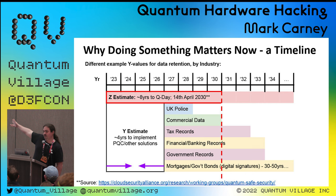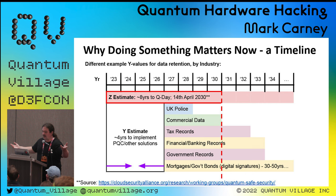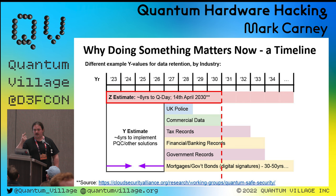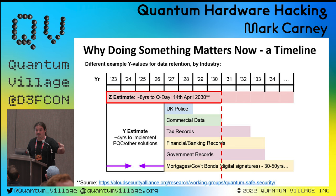With 2030 as the given date, here are some Y estimates. Four years to implement a PQC solution — who thinks that can be done in all enterprises? UK police data must be kept for two years, commercial data for about four years, tax records in most countries for seven years, government records ten or more years. Mortgages, government bonds, and long-term financial instruments can be valid for up to 30, 40, or 50 years. Any digital security applied to these things now has to keep working long after quantum is supposed to be here.